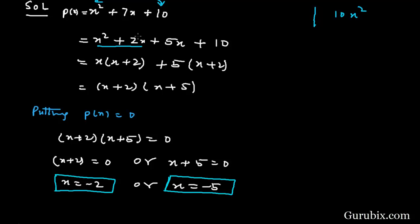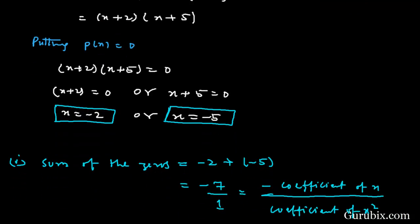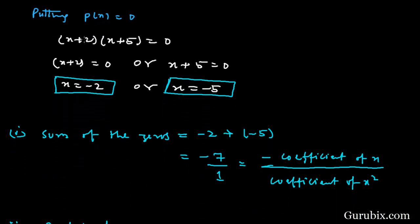Taking x common from the first two terms gives x(x + 2), and taking 5 common from the last two terms gives 5(x + 2). Now taking (x + 2) common from these two terms gives (x + 2)(x + 5). Setting p(x) = 0, we have (x + 2)(x + 5) = 0.